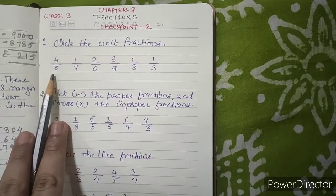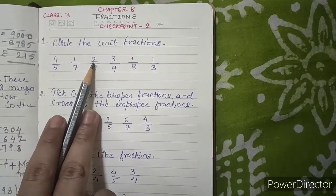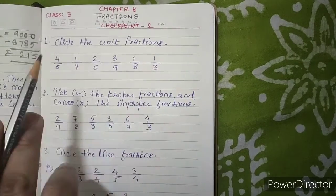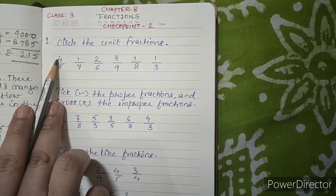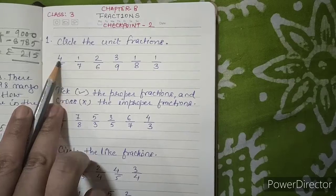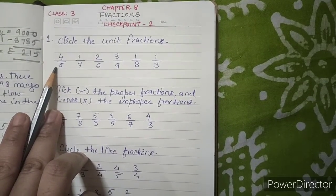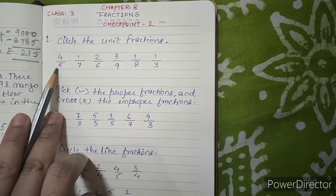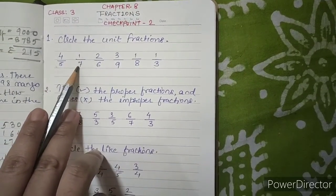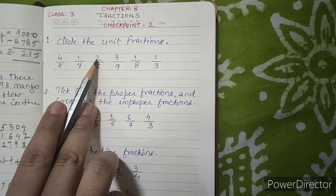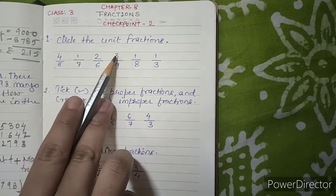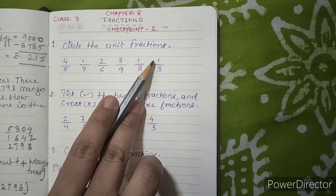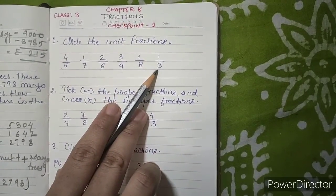In this question, the fractions given are 4 by 5, 1 by 7, 2 by 6, 3 by 9, 1 by 8, and 1 by 3. As you all know, the number above the line is the numerator and the number below the line is the denominator. So for 4 by 5: 4 is numerator, 5 is denominator; 1 by 7: 1 is numerator, 7 is denominator; 2 by 6: 2 is numerator, 6 is denominator; 3 by 9: 3 is numerator, 9 is denominator; 1 by 8: 1 is numerator, 8 is denominator; 1 by 3: 1 is numerator, 3 is denominator.